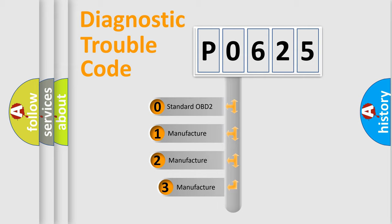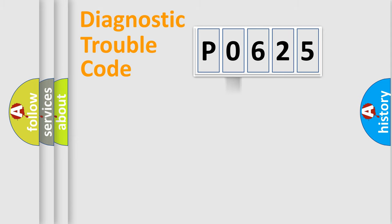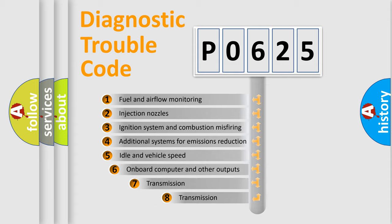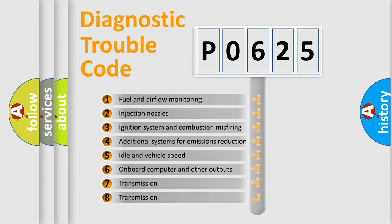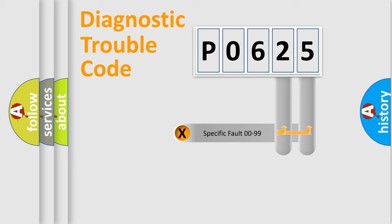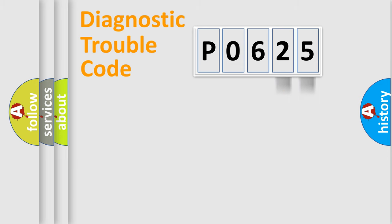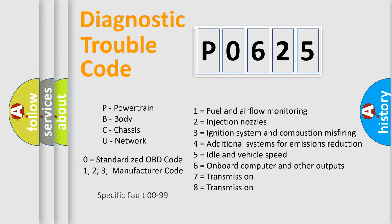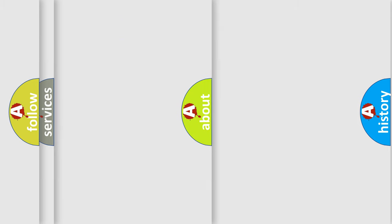If the second character is expressed as zero, it is a standardized error. In the case of numbers 1, 2, or 3, it is a more specific expression of a car-specific error. The third character specifies a subset of errors. This distribution is valid only for the standardized DTC code, where only the last two characters define the specific fault of the group. Such a division is valid only if the second character code is expressed by the number zero.